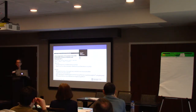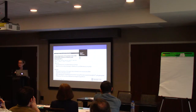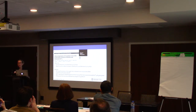A study recently published by a Chinese group evaluated the feasibility of ctDNA detection by next-generation sequencing and determined the concordance between ctDNA and tissue DNA. It was a retrospective study on prospectively collected tumor tissue and ctDNA, including 32 patients with advanced GIST, utilizing a next-generation sequencing panel incorporating more than 16 genes.